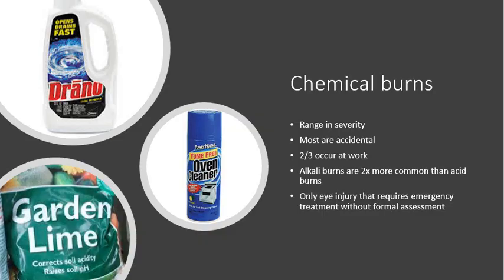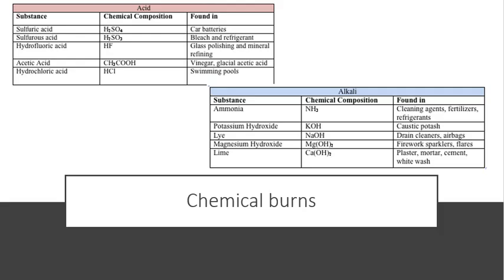Chemical burns is the next topic. Chemical injuries range in severity from something very trivial to potentially blinding. The majority of chemical injuries are accidental, but some are due to assault. Two thirds of accidental burns occur at work and the remainder at home. Alkali burns are twice as common as acid burns, because alkalis are more widely used at home and in industry. How severe the chemical injury is depends on the properties of the chemical, the area of the affected ocular surface, and how long it's been exposed.